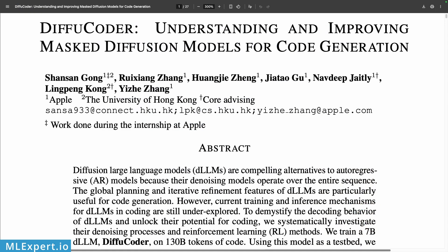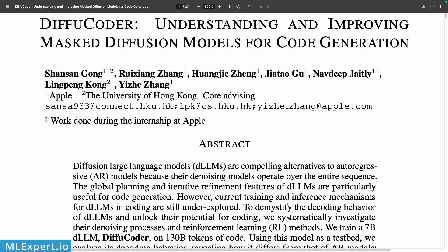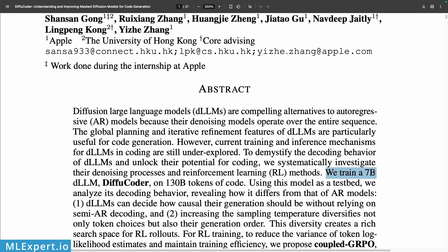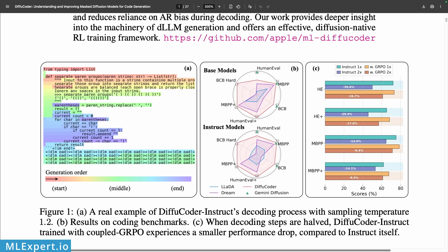This is the paper that Apple have released along with the code and weights for the model. They have trained a 7 billion parameter diffusion large language model on 130 billion tokens of code. The paper includes benchmarks comparing the DiffuCoder 7B model to Gemini Diffusion, DREAM, and ALADA.